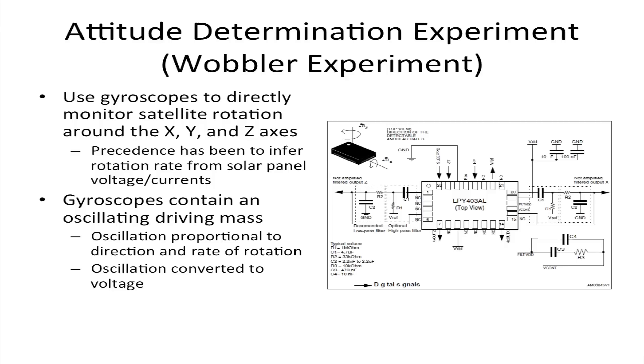I call the attitude determination experiment the 'wobbler experiment' because I'm interested in seeing what kind of wobble the satellite will experience over the Z-axis. It uses MEMS gyros — two gyros in each MEMS unit — set up in a constellation on the X, Y, and Z axes. Inside the gyro is a little arm that oscillates, and the oscillation depends on the rate and direction of rotation, which is translated into a voltage.